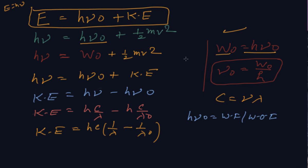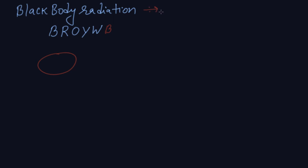Now, black body radiation. Dear students, a black body is the perfect emitter and perfect absorber of heat. The experiment shows that a black body first appears black, then red, then orange, then yellow, then white, and finally blue — this is the color change in black body radiation. This is the development leading up to the Bohr model. In tomorrow's next class, we will cover basic terms like isobars and isotones. Thank you, dear students.